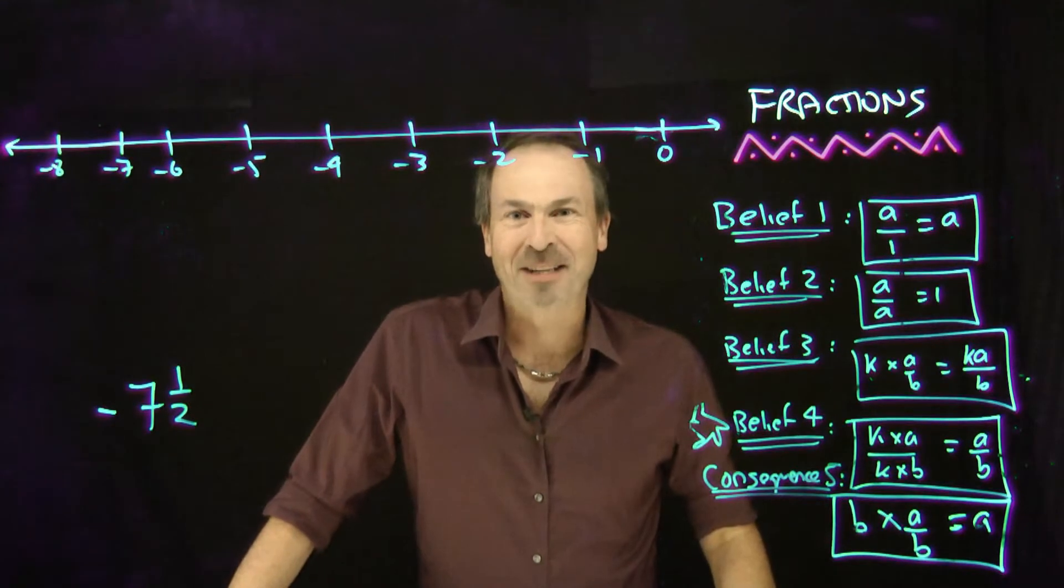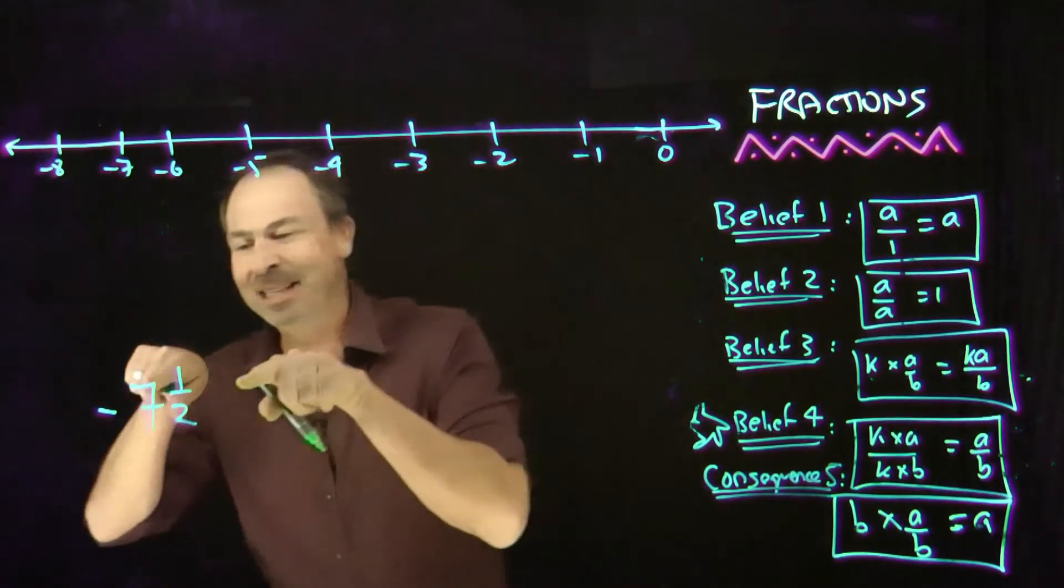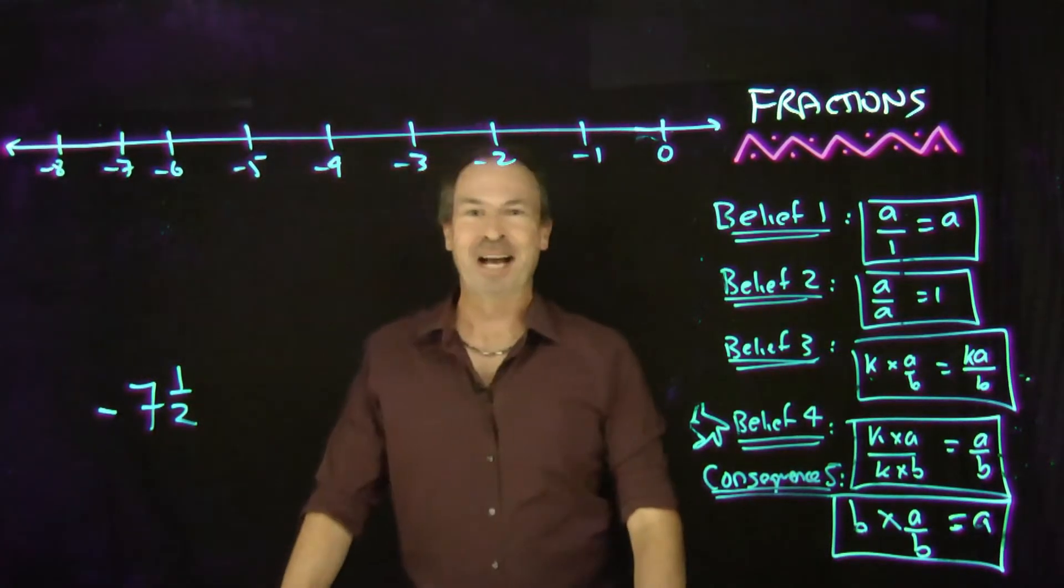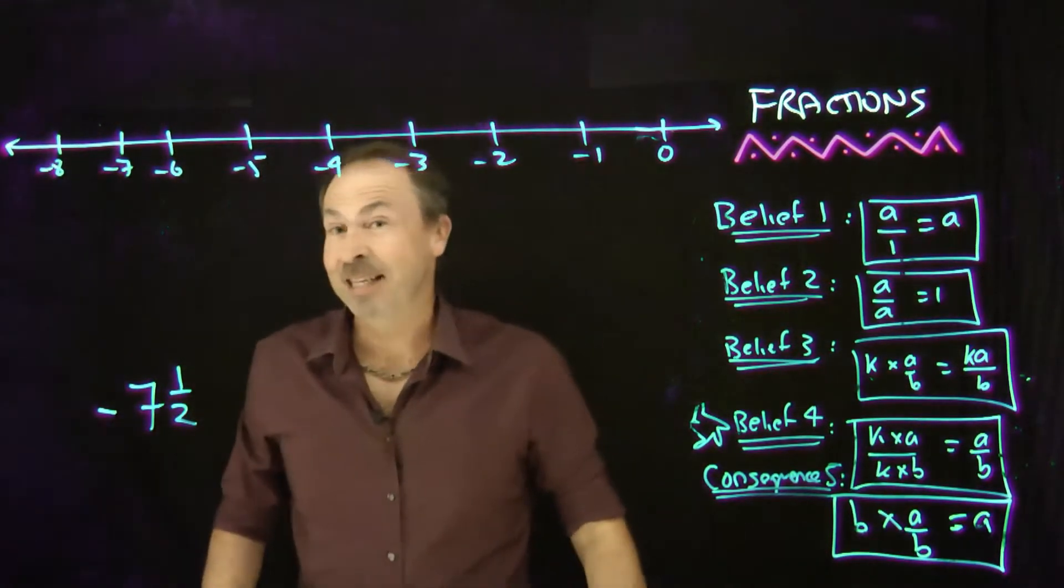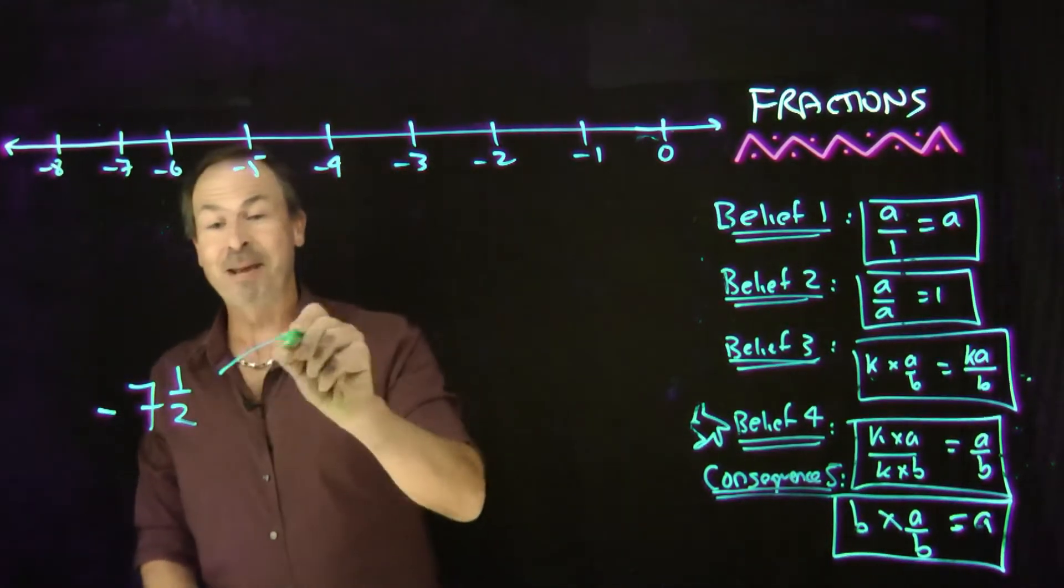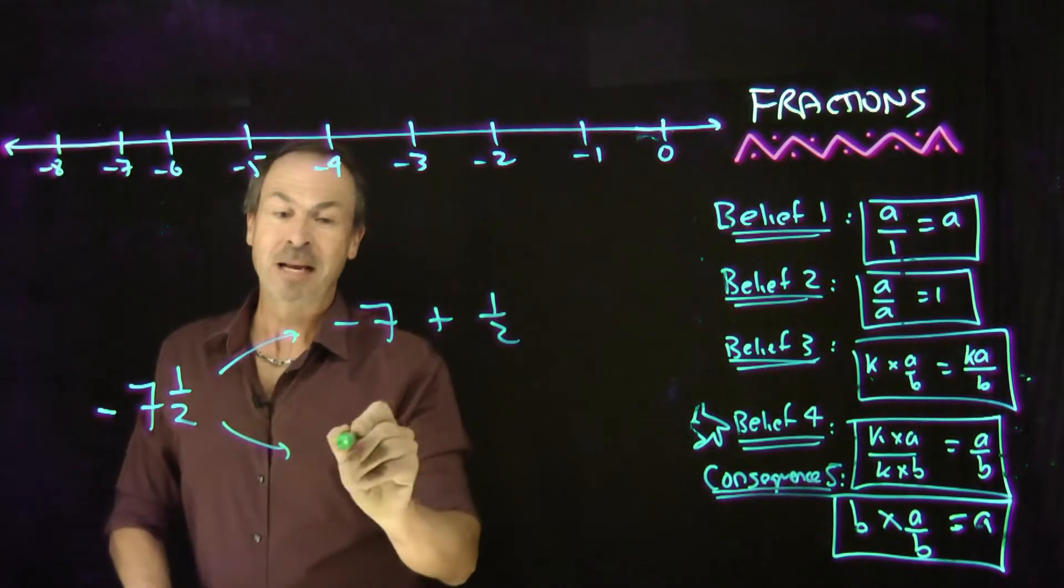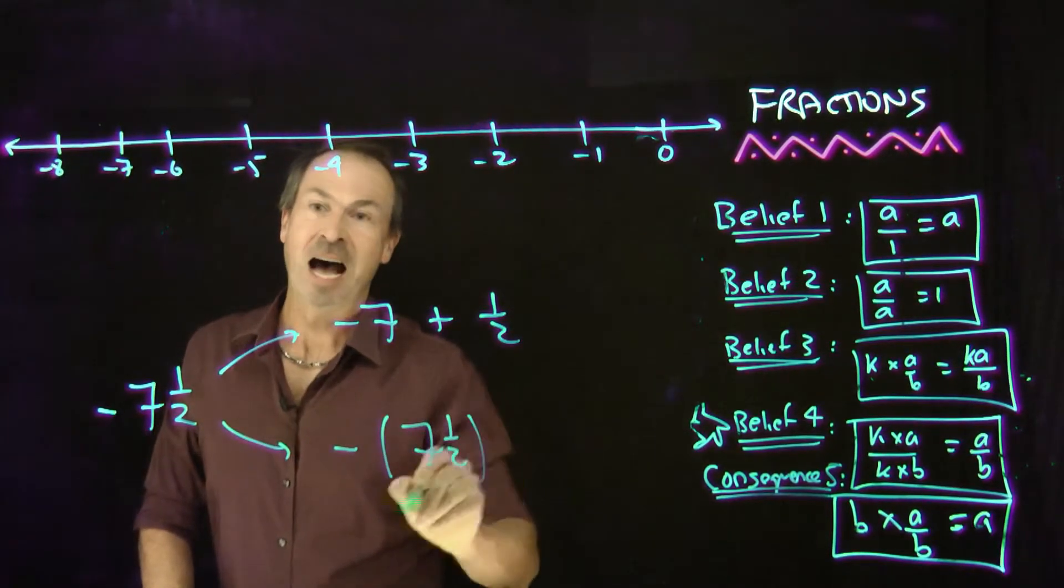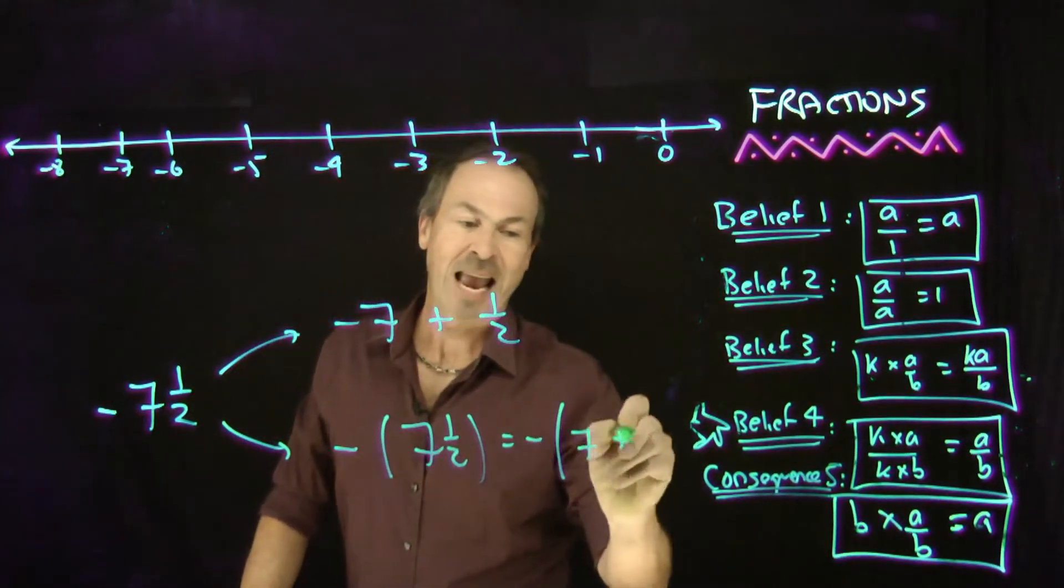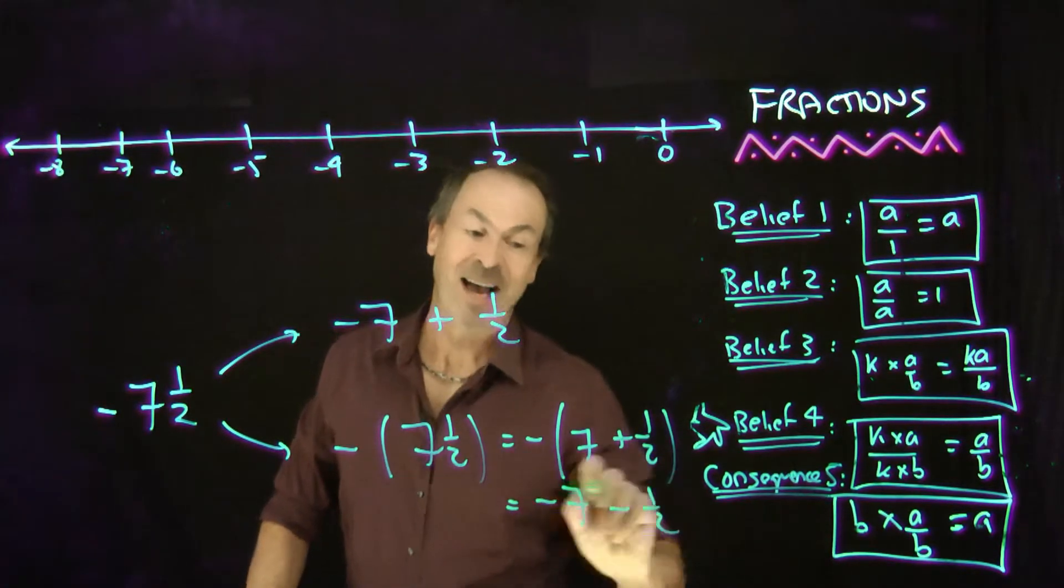As I was cleaning the board I realized I skipped over a subtle point about societal convention. To do with things that look like this, negative 7 and a half. This as it stands is actually ambiguous. It could mean two possible things. Does it mean negative 7 then add a half? Or does it mean the opposite of all of 7 and a half? That would be the opposite of 7 and the opposite of a half.